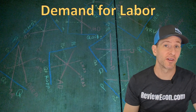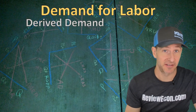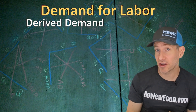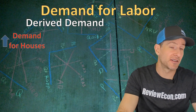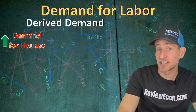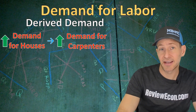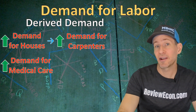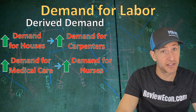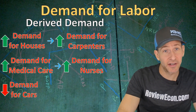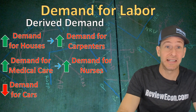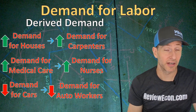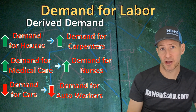The demand for labor is often referred to as a derived demand — the demand for the resource comes from the demand for the product itself. If there's an increase in the demand for houses, there will be an increase in the demand for carpenters. If there's an increase in the demand for medical care because our population is aging, there will be an increase in the demand for nurses. And when there's a decrease in the demand for cars, we should see a decrease in the demand for auto workers.